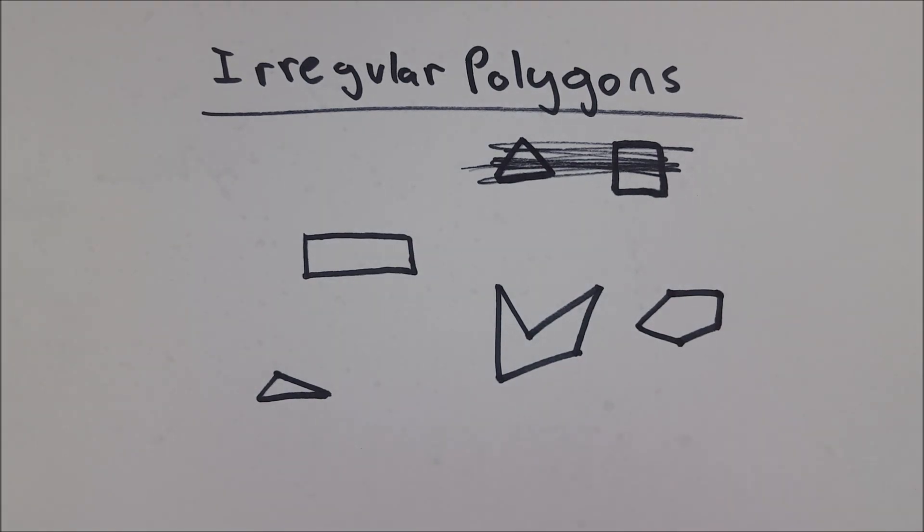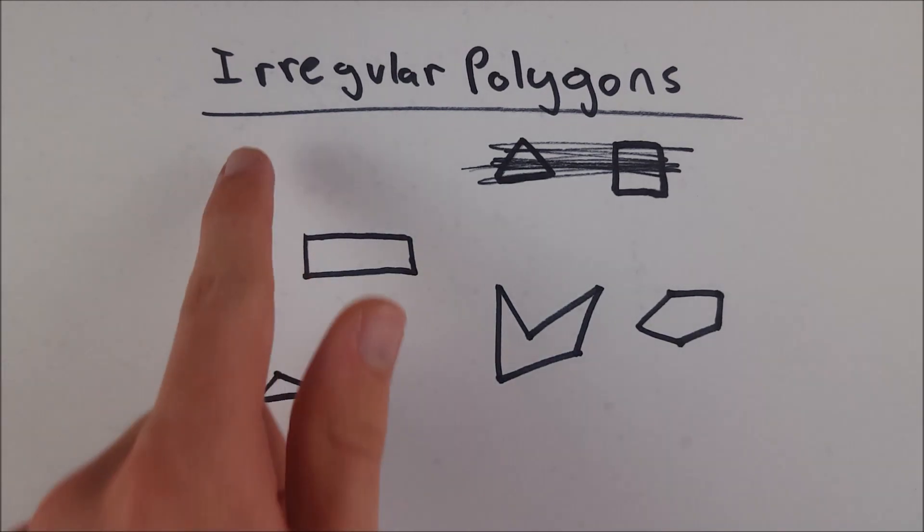So that's all they are. They're just shapes that often look a little wonky, although most rectangles don't really look all that strange. Irregular polygons are simply polygons that are not equiangular and equilateral. So they can be equilateral or equiangular, but they can't be both. If they were, they'd be regular. But since they're not regular, they are irregular.